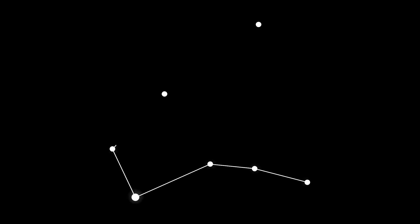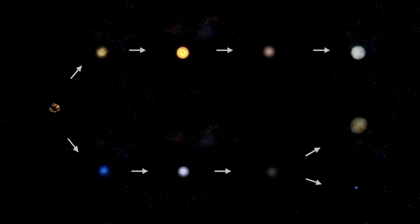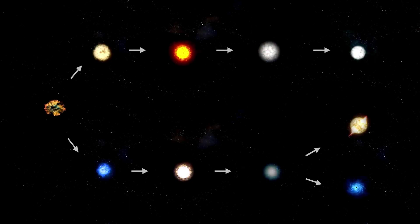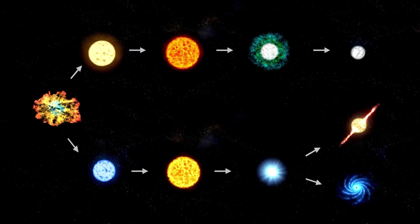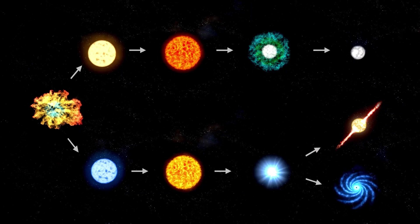One of Betelgeuse's cosmic cousins is Antares, a red supergiant located in the constellation Scorpius. Antares is also a variable star, meaning that it undergoes changes in brightness over time, just like Betelgeuse.